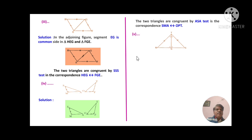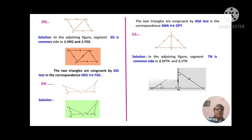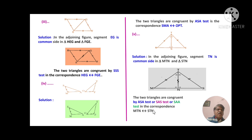For the last problem, segment TN is the common side in triangle MTN and triangle STN. Marking TN as common, these two triangles are congruent. They can be shown congruent by three different tests: angle-side-angle (ASA), side-angle-side (SAS), or side-angle-angle (SAA) test. The correspondence is MTN to STN.